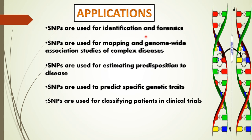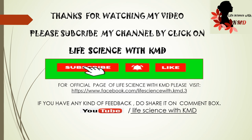Applications of SNPs: SNPs are used for identification and forensics, mapping and genome-wide association studies of complex diseases such as cancer, estimating predisposition to diseases, predicting specific genetic traits, and classifying patients in clinical trials.